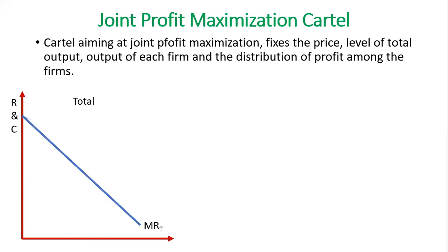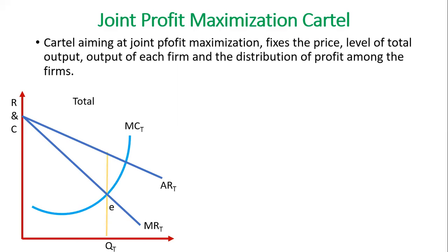Now let's discuss it graphically. This diagram represents the total market. The AR and MR curves represent the sum of ARs and MRs of all the firms in this market. The market is in equilibrium at point E where MC equals MR. Therefore, the total output level will be at point QT, and this output will be produced jointly by all the firms in this cartel.